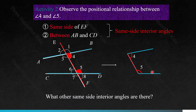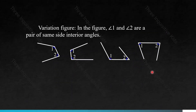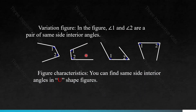Do you spot any other pairs of same-side interior angles? That would be angles 3 and 6. Here are some variations — in the following figures, angles 1 and 2 are a pair of same-side interior angles. You can find same-side interior angles in U-shaped figures.